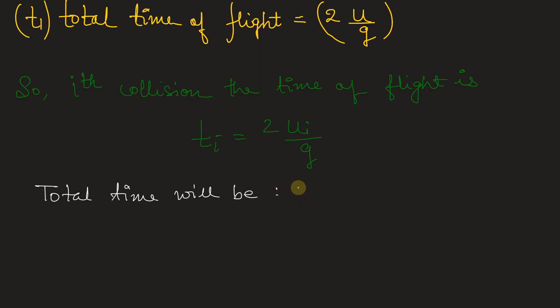So this will be summation, so sum of all the time of flight. So T will be equal to... let's write capital T for this total time for the ball to come to rest.